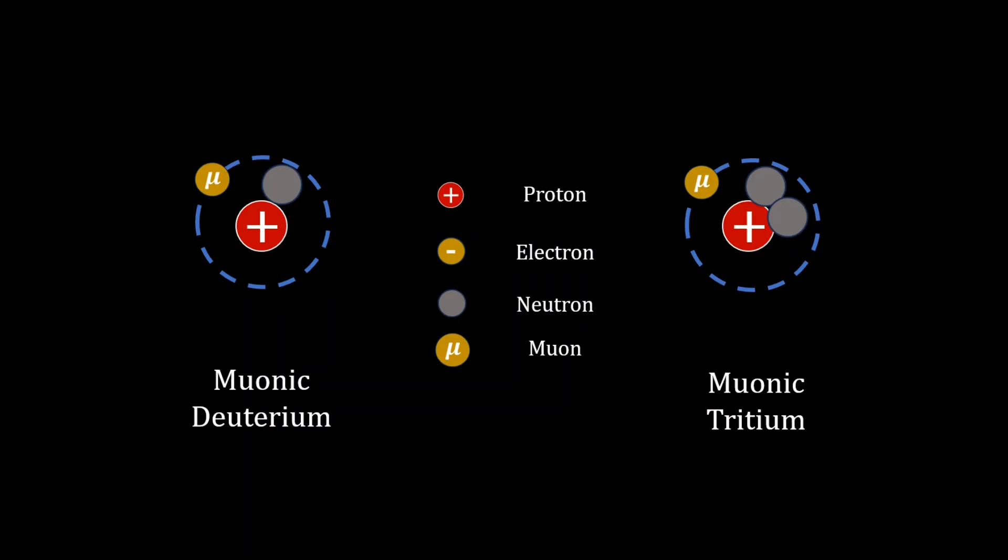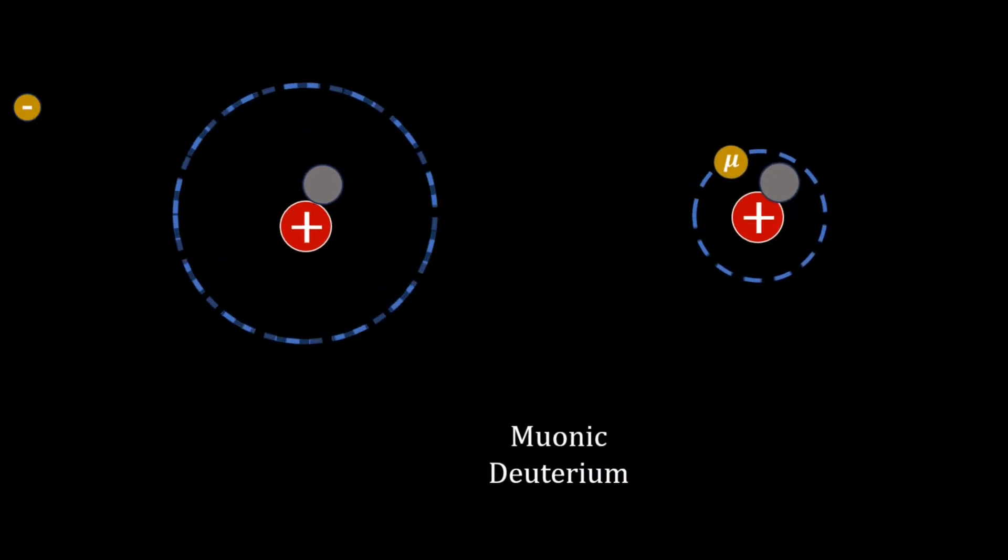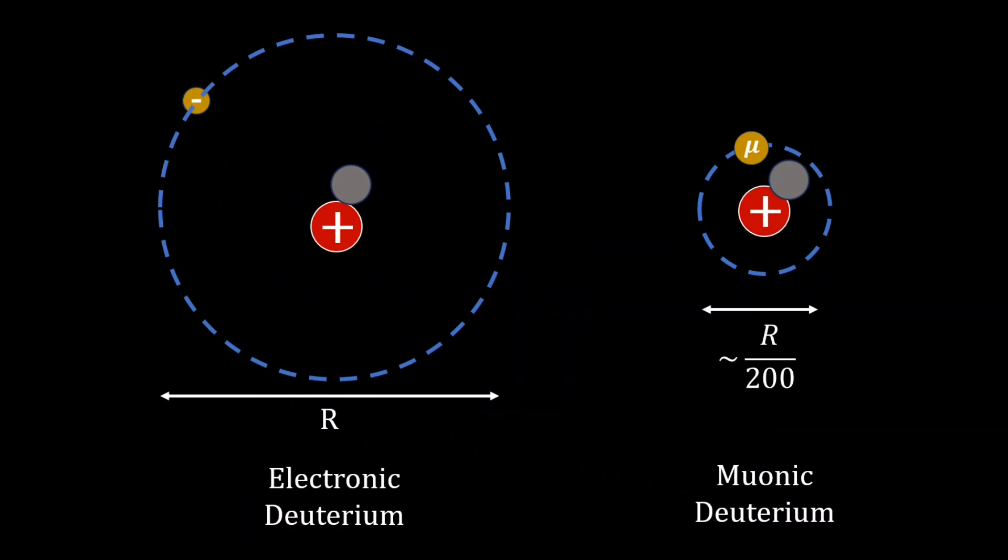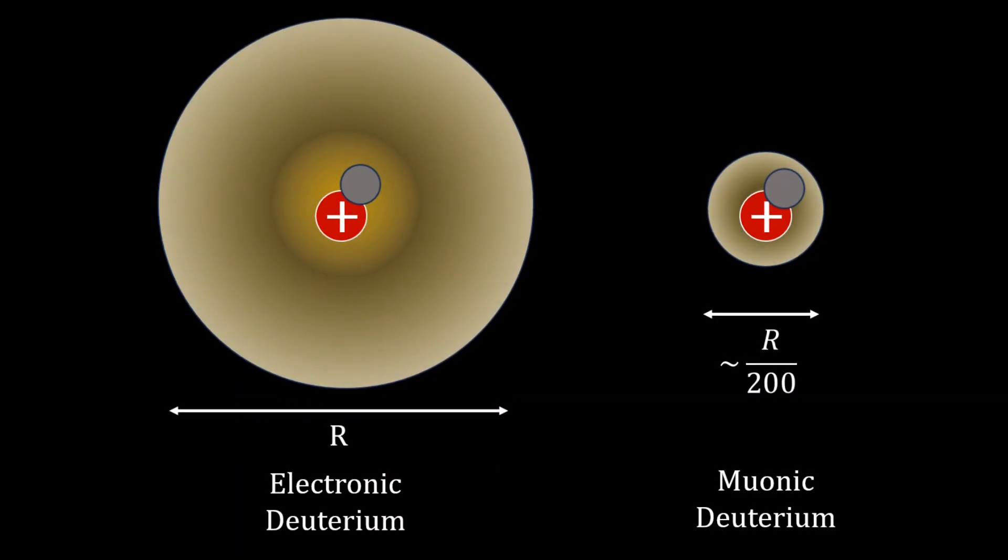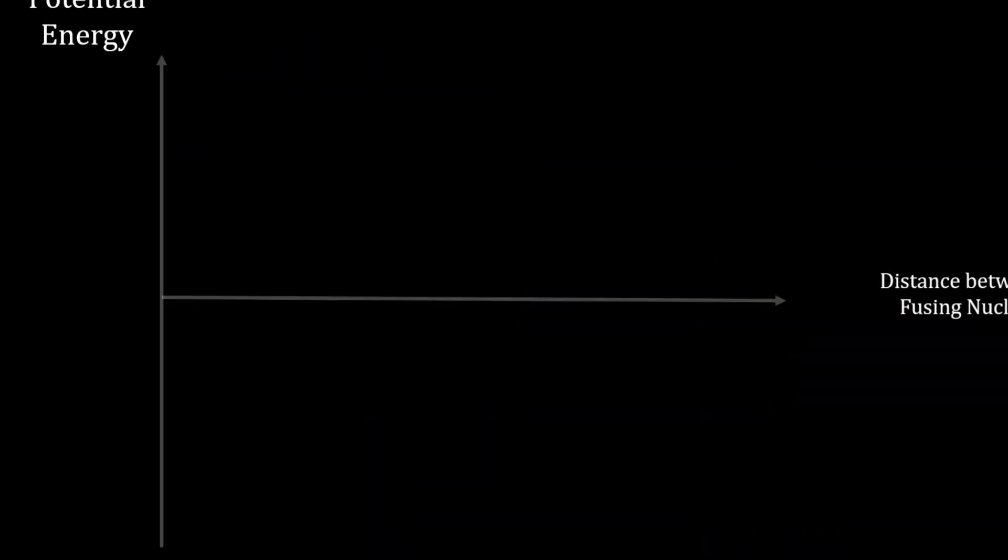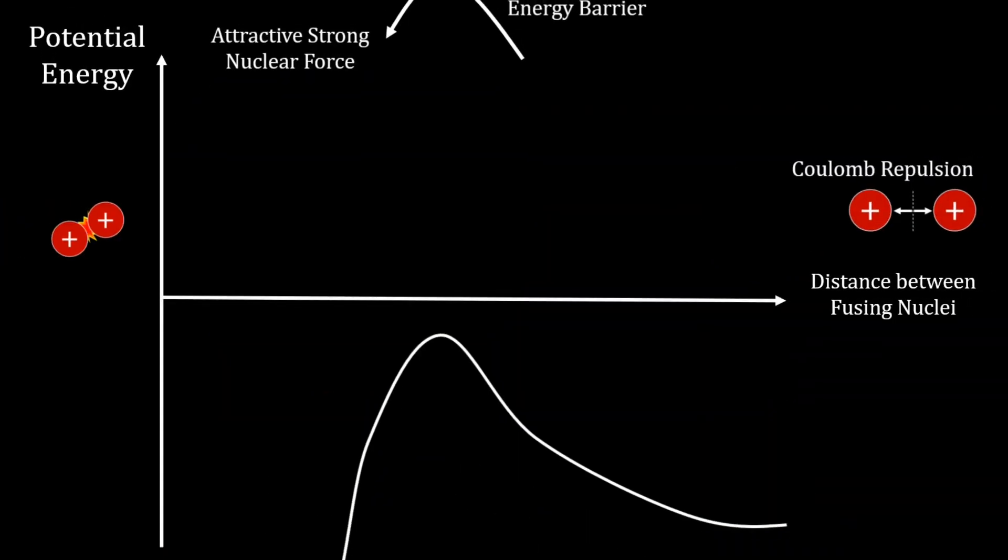With muons greater mass, Newton's law of gravitation correctly predicts that muons orbit to the nucleus much more closely, roughly 200 times closer. Muonic deuterium, therefore, has a smaller electron cloud than ordinary deuterium, allowing the fusing atoms to get closer together, lowering the Coulomb barrier.